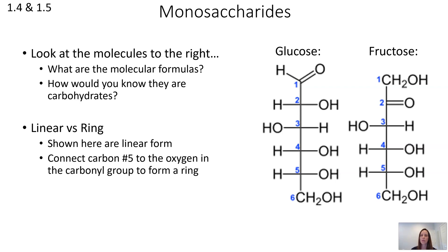The molecular formula can also help us determine that these are carbohydrates. We can see that there are the three atoms — carbon, hydrogen, and oxygen — and those three types of atoms are in all carbohydrates. There are twice as many hydrogens as there are oxygens in these molecules, which gives us a clue that these are carbohydrates.